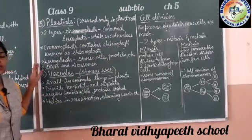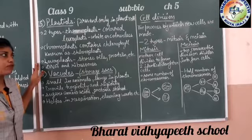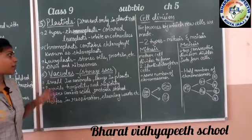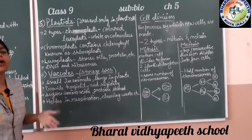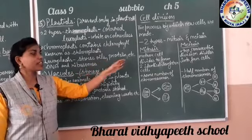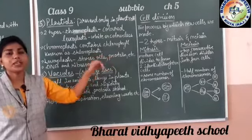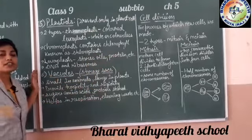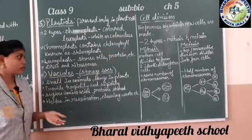The function of leucoplast is that it mainly stores oils, proteins, and starches. They store these materials so the plant can use them later when required. They also store sugars and starches that are made inside the plant, and release them when the plant cell needs them.